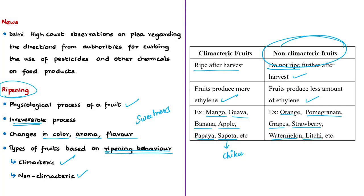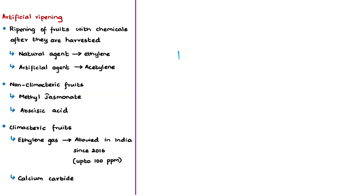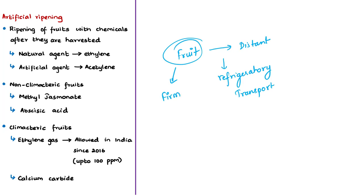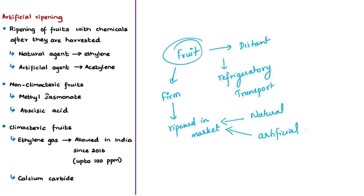Climacteric fruits produce ethylene gas, which is a plant hormone that ripens the fruit naturally. In recent decades, demand for fruits has increased and fruits are sent to distant places. Firm fruits are sent during transportation as they are least damaged during marketing. Once these firm fruits reach their destination, they are ripened in the destination markets. This ripening can happen using the natural ripening agent ethylene, or by other ethylene-related hydrocarbons like acetylene. Artificially exposing fruits to these chemicals to quicken their ripening process is what we call artificial ripening.